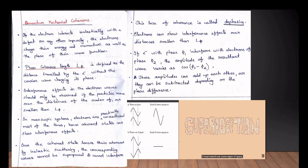These electron particles within the phase coherence length will produce different interference effects. Then we will be able to make a superposition effect. We can make electrons within phase coherence length exhibit different interference effects.